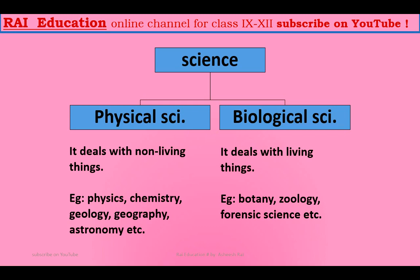The sub-branches of physical science include physics, chemistry, geology, geography, astronomy, etc.